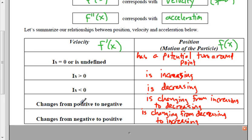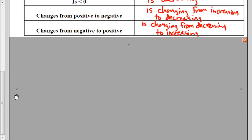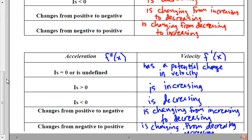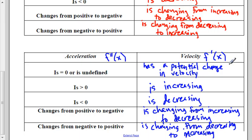Calculus unit 5, day 43 notes part 3. We're going to correlate the concepts of position, velocity, and acceleration to what we already know about a function and its first and second derivative. The original function corresponds with position, the first derivative corresponds with velocity, and the second derivative corresponds with acceleration.